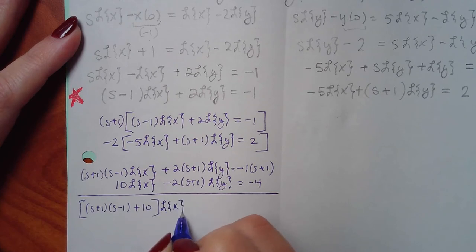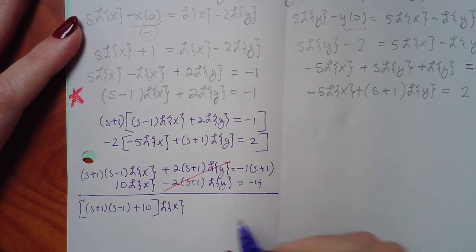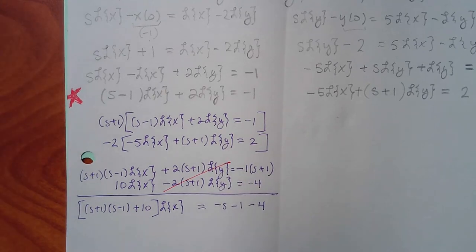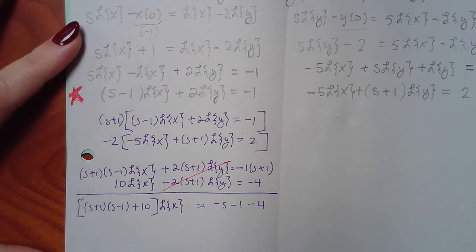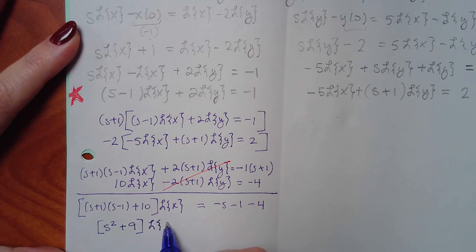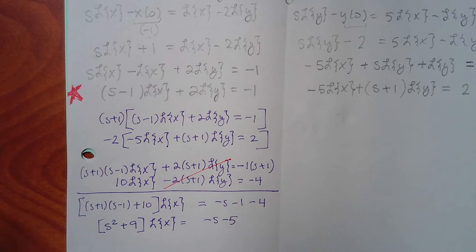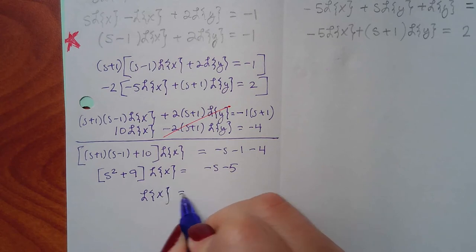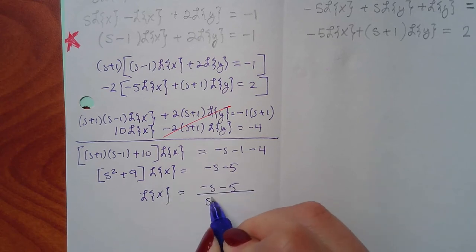So I end up with: [(S plus 1)(S minus 1) plus 10] L{X} — those L{Y} terms are exactly the same with opposite signs, so they wipe each other out. On the right-hand side I get negative S minus 1 minus 4, which gives me negative S minus 5. And (S plus 1)(S minus 1) is S squared minus 1, plus 10 gives S squared plus 9.